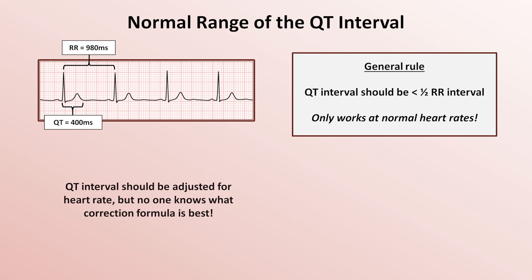Instead, the QT interval should be adjusted for heart rate, as faster heart rates result in a QT interval which is shorter, but not as relatively shortened as the RR interval. So at tachycardic rates, the QT will appear prolonged. The opposite holds true for bradycardias, in which the QT interval does not lengthen in proportion to the RR interval. Unfortunately, no one knows what correction formula best accounts for this effect.